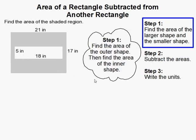So the first thing we need to do is find the area of the outer shape, and then find the area of the inner shape. The larger area is this gray rectangle, and then the inner shape is this smaller white rectangle.